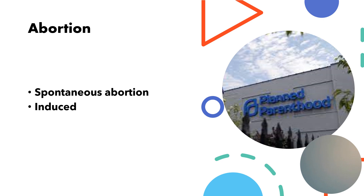Abortions — a big topic. Spontaneous abortion is a loss of pregnancy before 20 weeks, also referred to as a miscarriage. We have different types: a threatened abortion, where the woman has bleeding and cramping but there's no cervical dilatation and it might resolve. Inevitable abortion is bleeding and cramping with dilatation, and there may be some leakage of amniotic fluid — in other words, it's going to happen regardless of what we do.